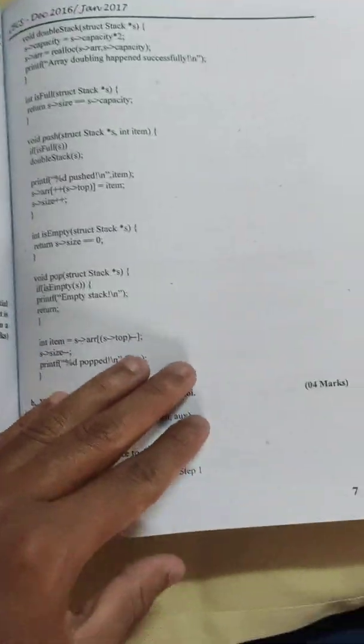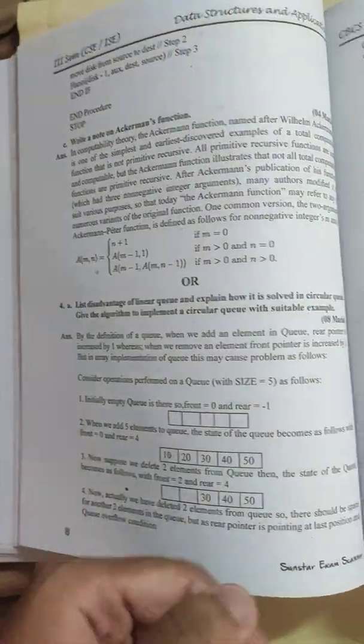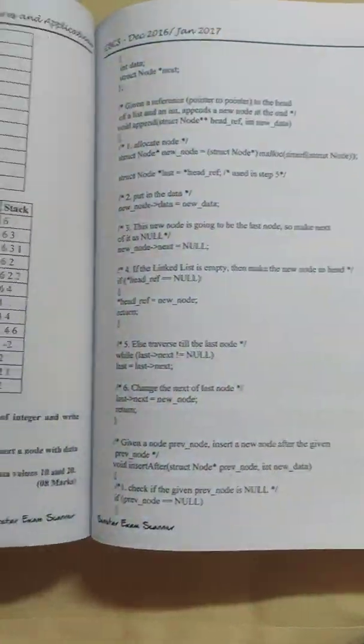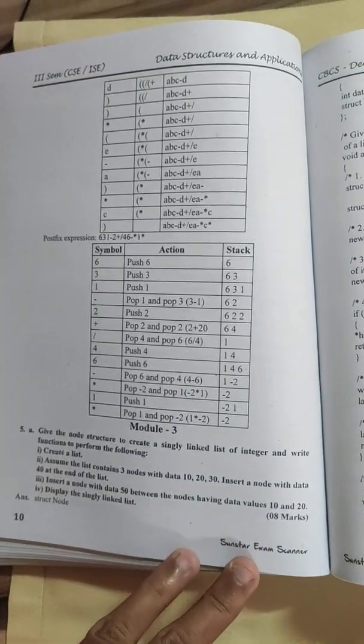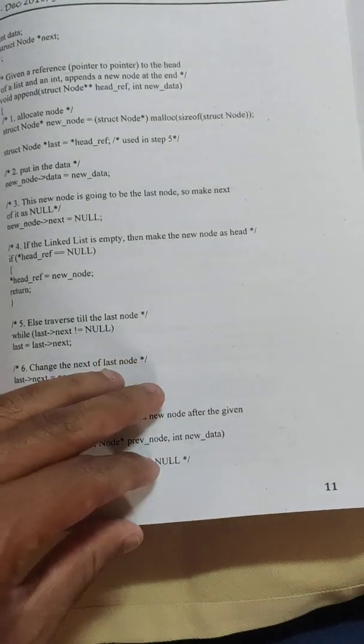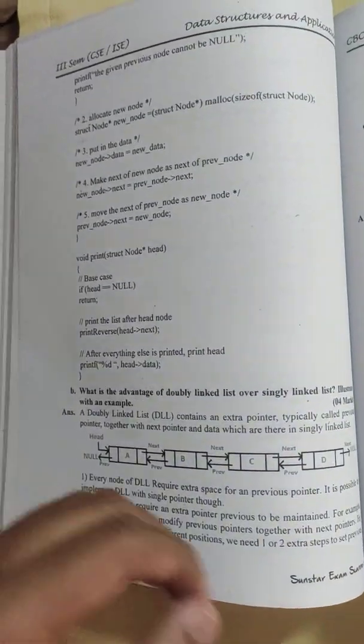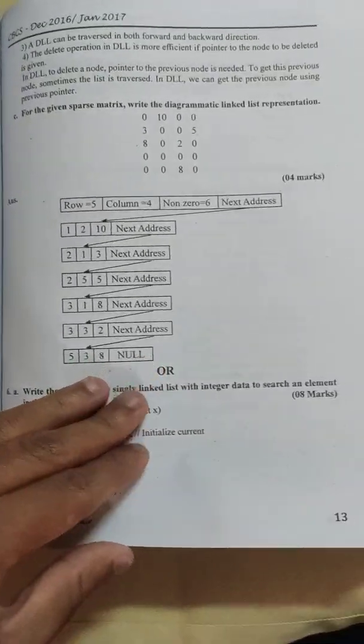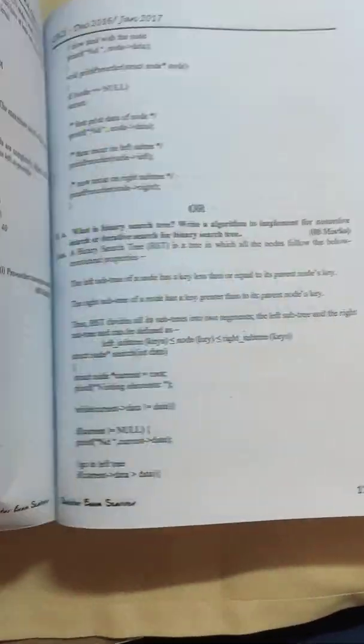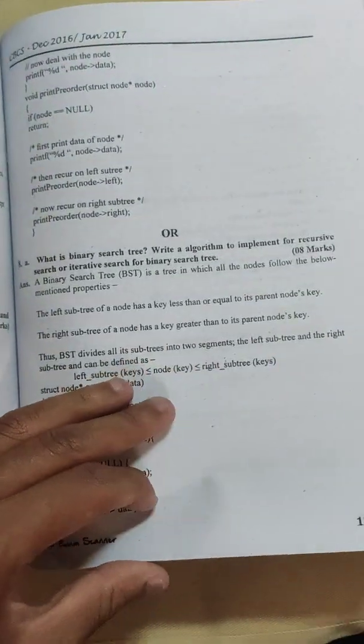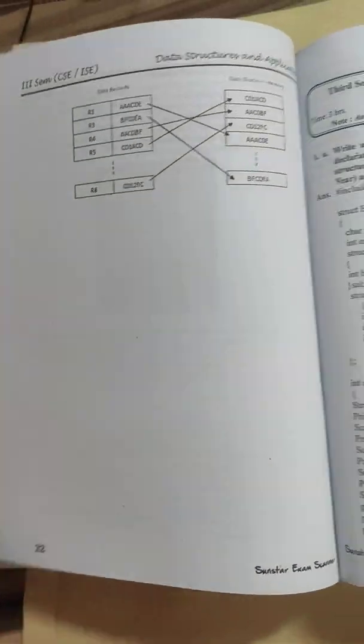It also depends on the compiler which you are running. If you are running on Code Blocks, sometimes if you don't specify the size of an array then it gives an error. That version difference is in C programming you are using here.